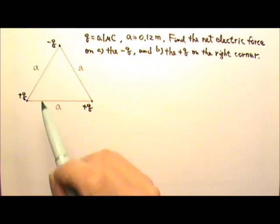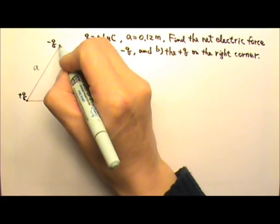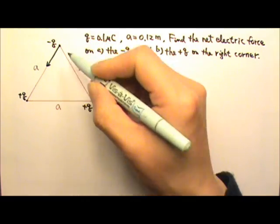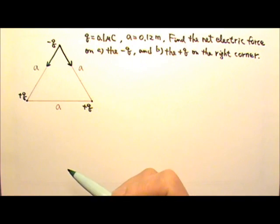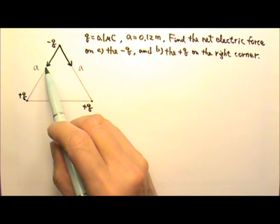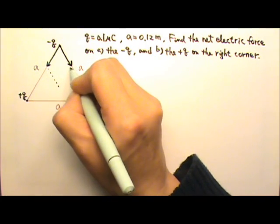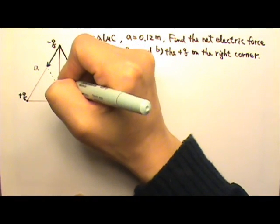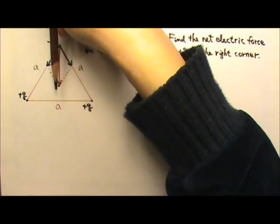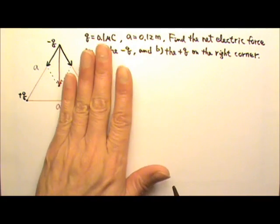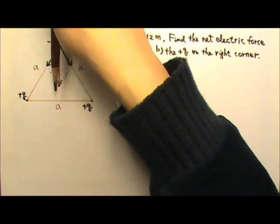For the negative Q, there are two electric forces acting on it. There's the attractive force from this positive Q over here, which pulls it that way, and another attractive force from the positive Q on the other side. We have to add these two forces together as vectors by making a parallelogram, and the diagonal is the sum. The net electric force on the negative Q goes straight down towards the center of the triangle because it's symmetric on both sides — two positive Qs attracting the negative Q — so it makes sense for the force to go this way.